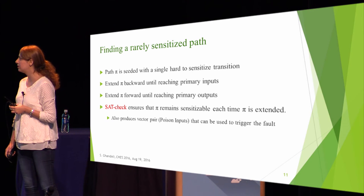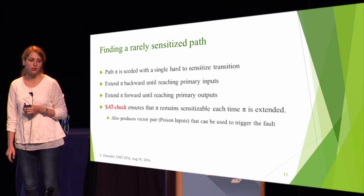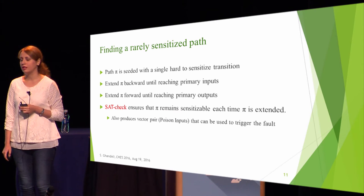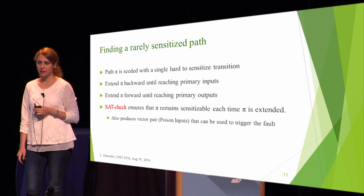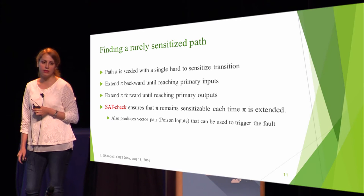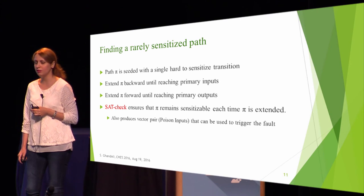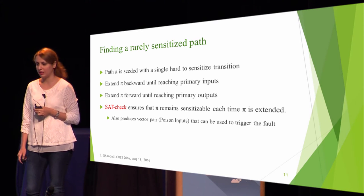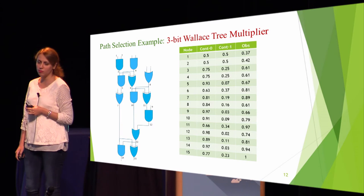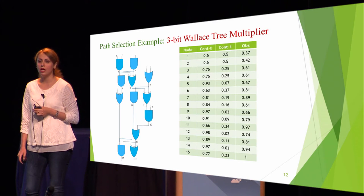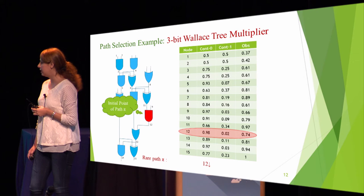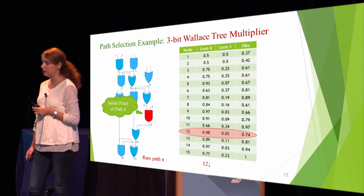First I talk about the first phase: finding a rarely sensitized path. We initialize a path with a hard-to-trigger node, then extend this path backward until reaching a primary input, then go forward until reaching a primary output. At each step, a SAT check is used to ensure triggerability. Also, the SAT check returns a pair of inputs which are poison inputs and can be used as a trigger for the fault by the attacker. Here is an example for our path selection algorithm on a subset of a 3-bit Wallace-3 multiplier. Node 12 is added to the rare path as an initial point.